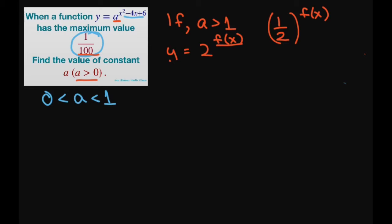So basically, to do that, let's let f of x equal our exponent, which is x squared minus 4x plus 6. And when f of x has a minimum value, then y equals a to the power of f of x has a maximum value.